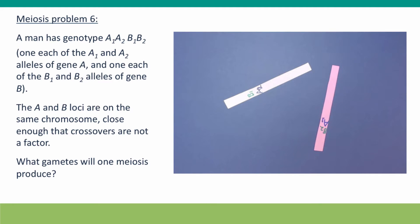This problem looks very similar to problem 4, in that our man is heterozygous for two genes. He's got two different alleles at each of two genes. The difference is that both of these genes are on the same chromosome, and they're close enough that we don't have to worry about crossing over, which is good because we haven't learned about crossing over yet.